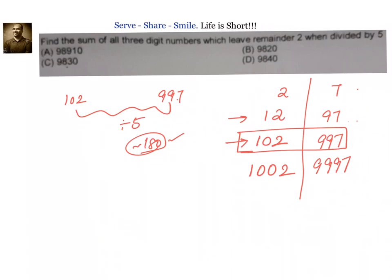To repeat: the three-digit numbers leaving remainder 2 when divided by 5 start at 102 and the greatest three-digit number in this sequence is 997. There are approximately 180 such numbers. Since all these numbers are increasing in value, their sum is certainly greater than 180 times 102, which is around 18,000. There is only one option greater than 18,000, and that is option A, so option A is the correct answer.